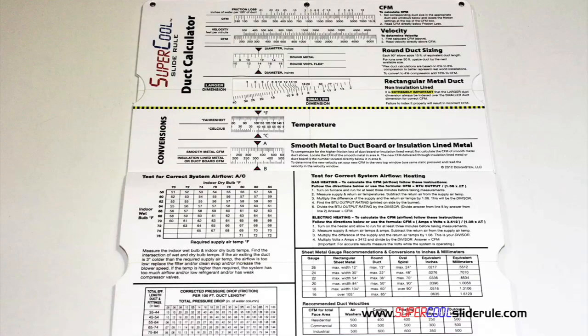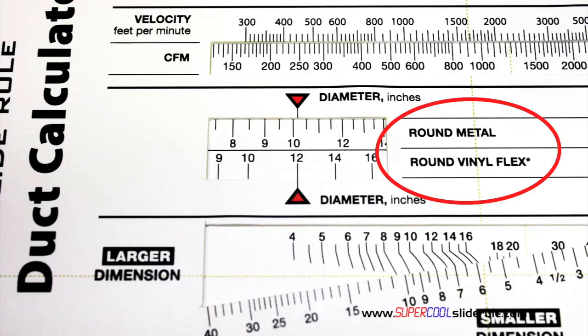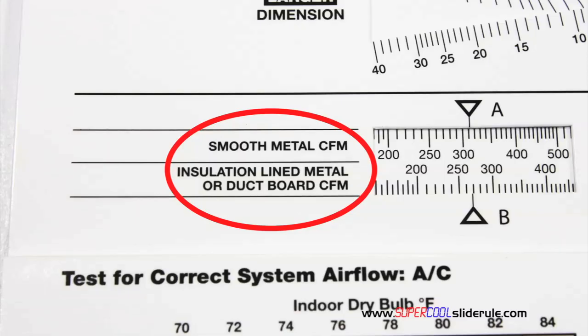Inside is packed with even more information. It performs sizing of both metal and flexible duct. It has the only direct reading conversion from smooth metal to insulation line metal we've ever seen. The majority of technicians have never been taught that if the insulation is on the inside of the ductwork, you cannot size it with a regular duct calculator.